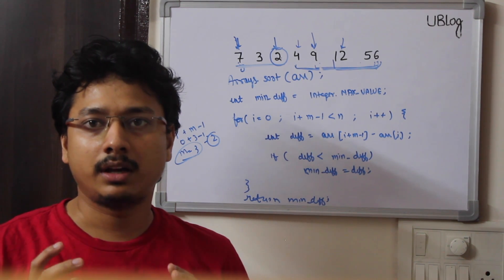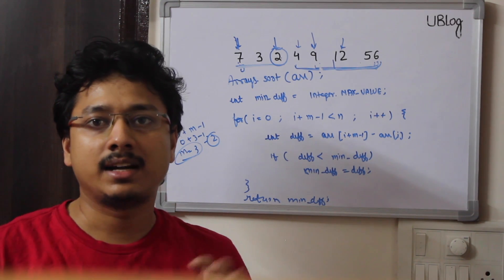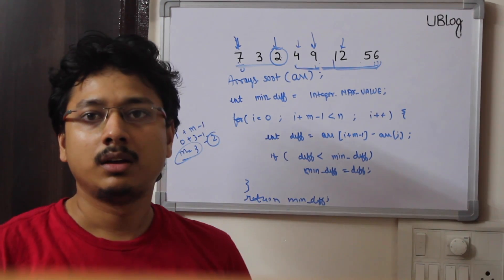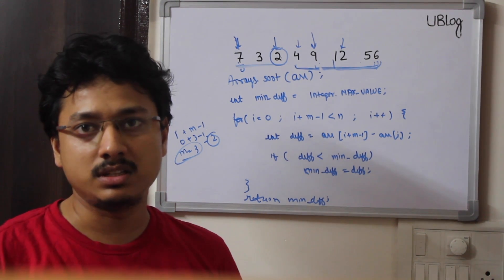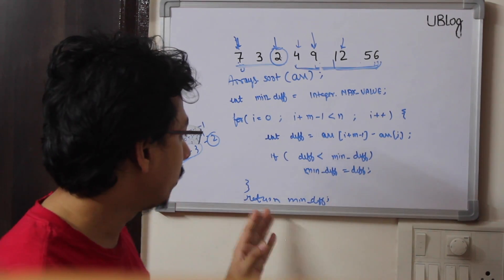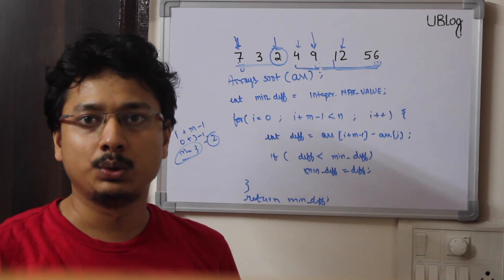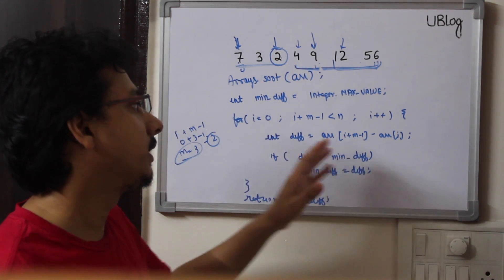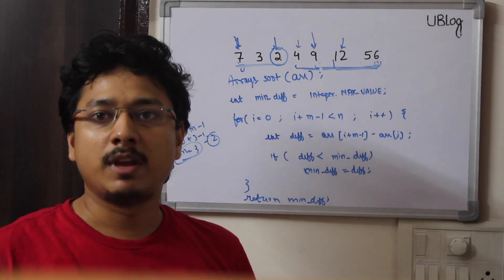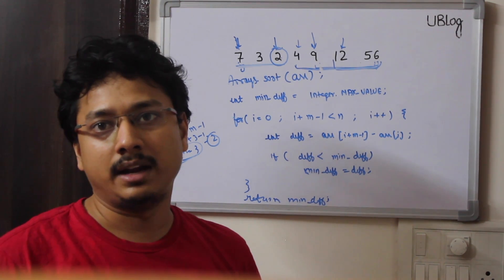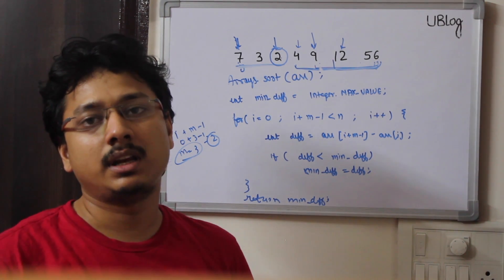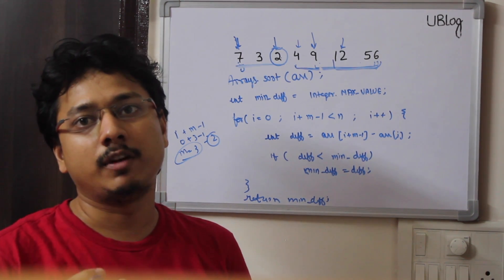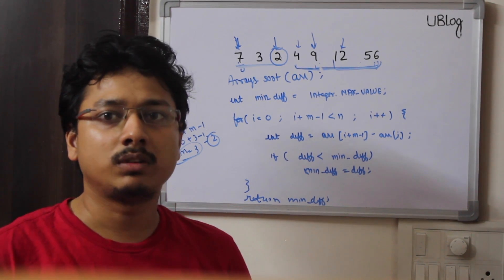Sorting the array and using this sliding window method makes the solution easy. An interviewer might also ask you to return the actual packets given to students. For that, maintain a start and end variable - update them whenever you find a new minimum, then return start and end. All elements from start to end are the packets distributed to students.